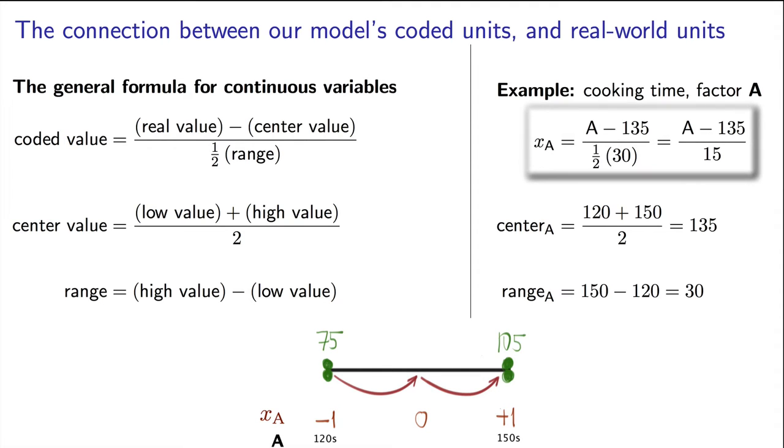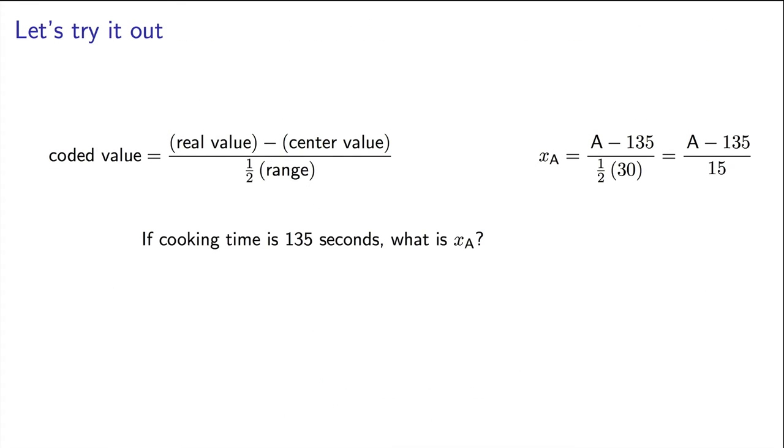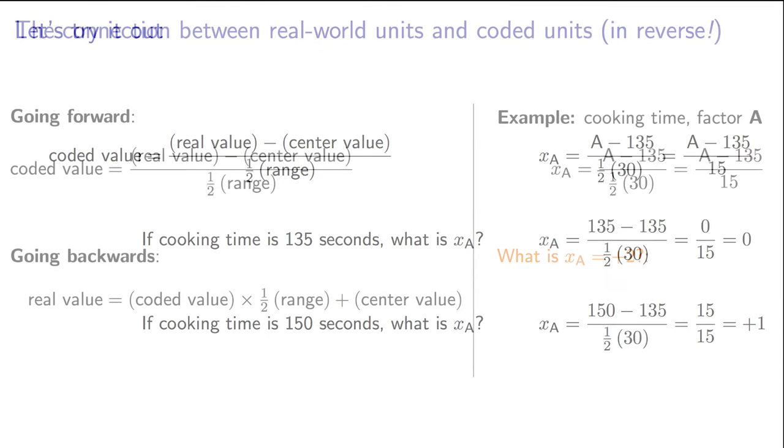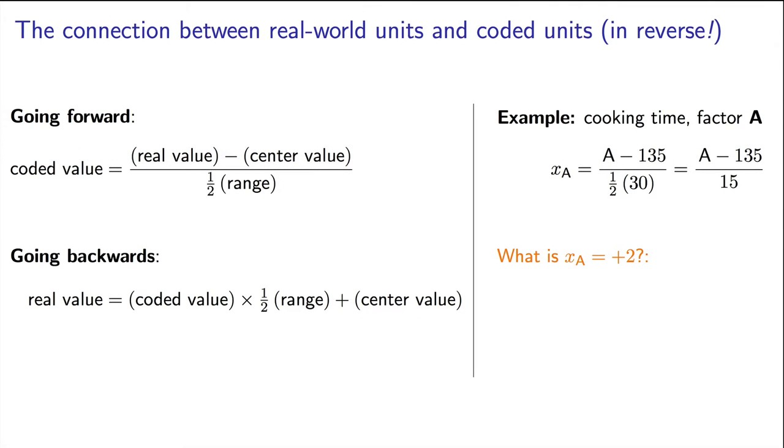Let's try using this formula for the real world units of 135 seconds of cooking time. So that's 135 minus 135, which equals 0, divided by half the range of 15, which is still 0. So the coded value for 135 seconds is 0. A cooking time of 150 seconds should correspond to plus 1 in coded units, and the formula shows that that's correct. You could use the formula in the backwards direction. What does a cooking time of plus 2 in coded units correspond to in real world units? If we work in reverse, we multiply our coded value by half the range, so that's plus 2 times 15, which equals 30. Then instead of subtracting the center point, we add it. So 30 plus 135 equals 165 seconds.